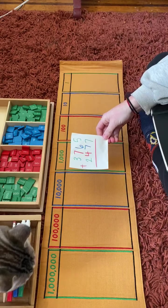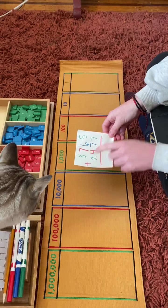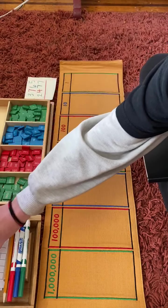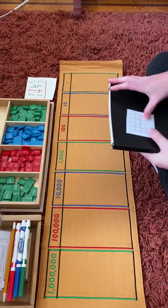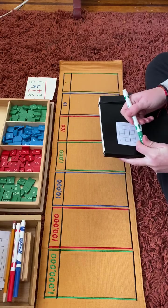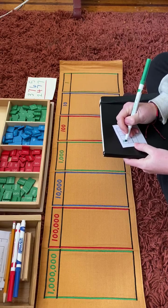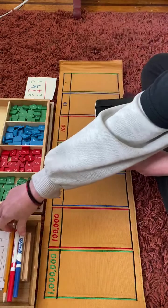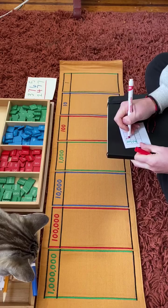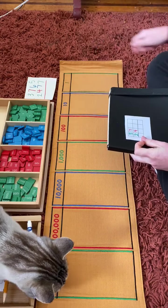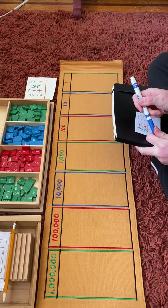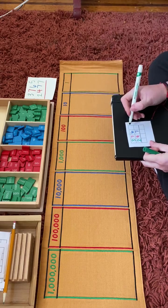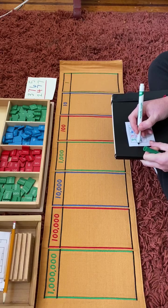The problem we're going to look at today is 3,765 plus 2,477. I'm going to write that down. And we're adding. We're putting things together.